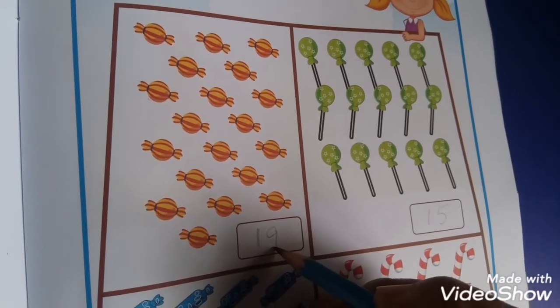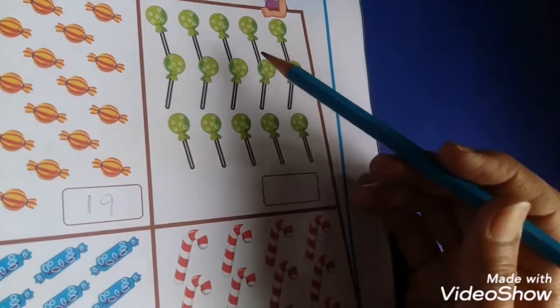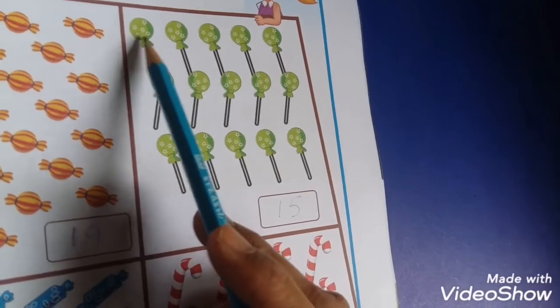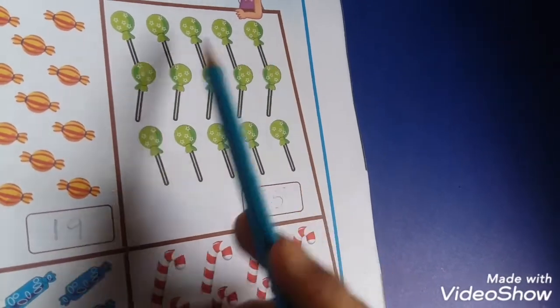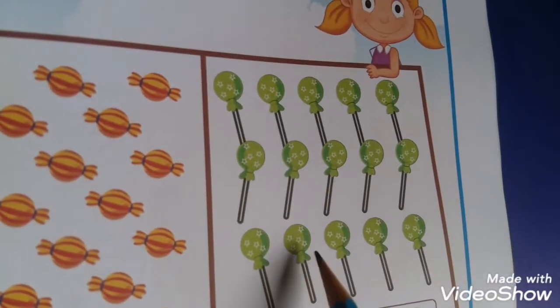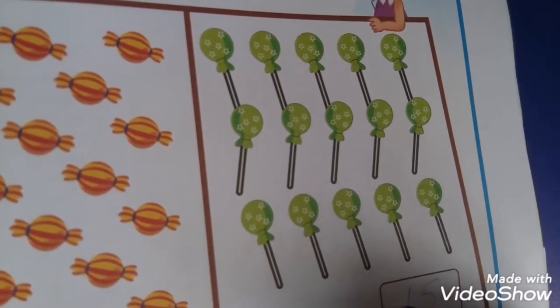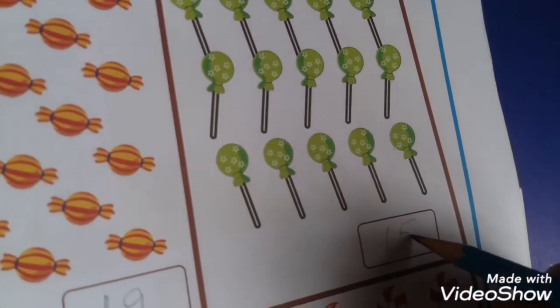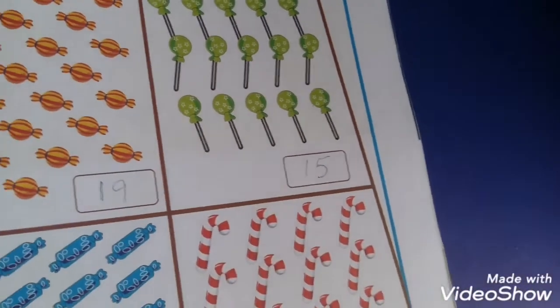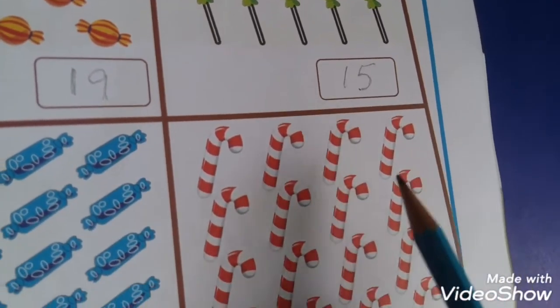You are looking at these sweets, a type of lollipop. How many are these? One, two, three, four, five, six, seven, eight, nine, ten, eleven, twelve, thirteen, fourteen, fifteen. Write in this box: one, five - 15. How many are these? 15.